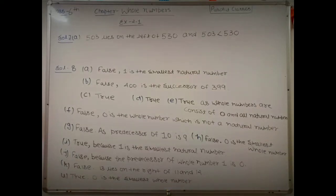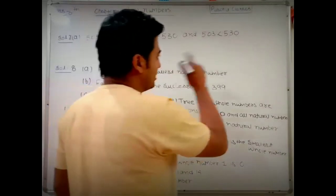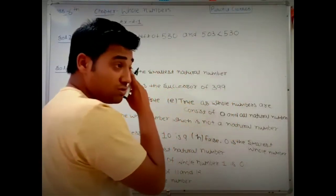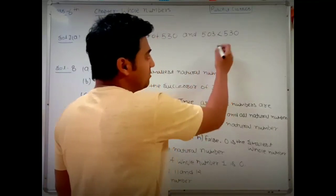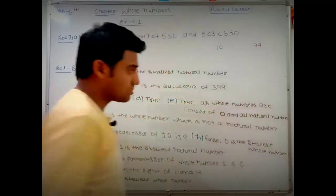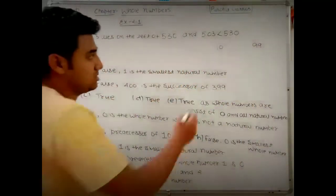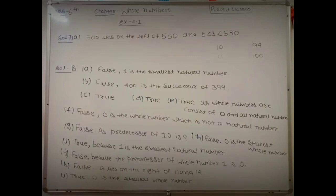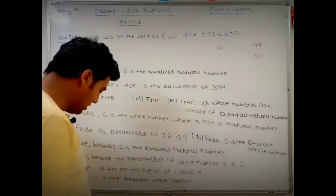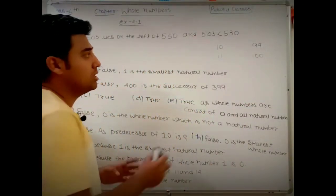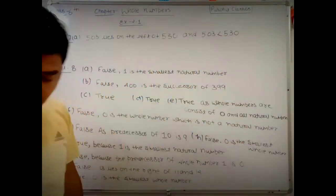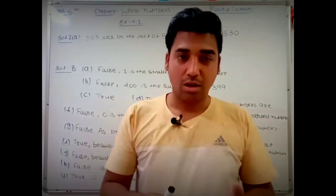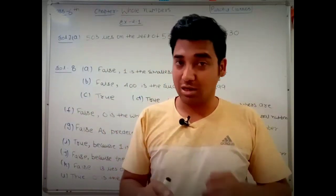The last part says: the successor of a two-digit number is always a two-digit number. Think about the smallest two-digit number, 10 — its successor is 11, still two digits. But the greatest two-digit number is 99 — its successor is 100, which is a three-digit number. You can now decide yourself whether the statement is true or false and write the answer with a supporting example in the comments.